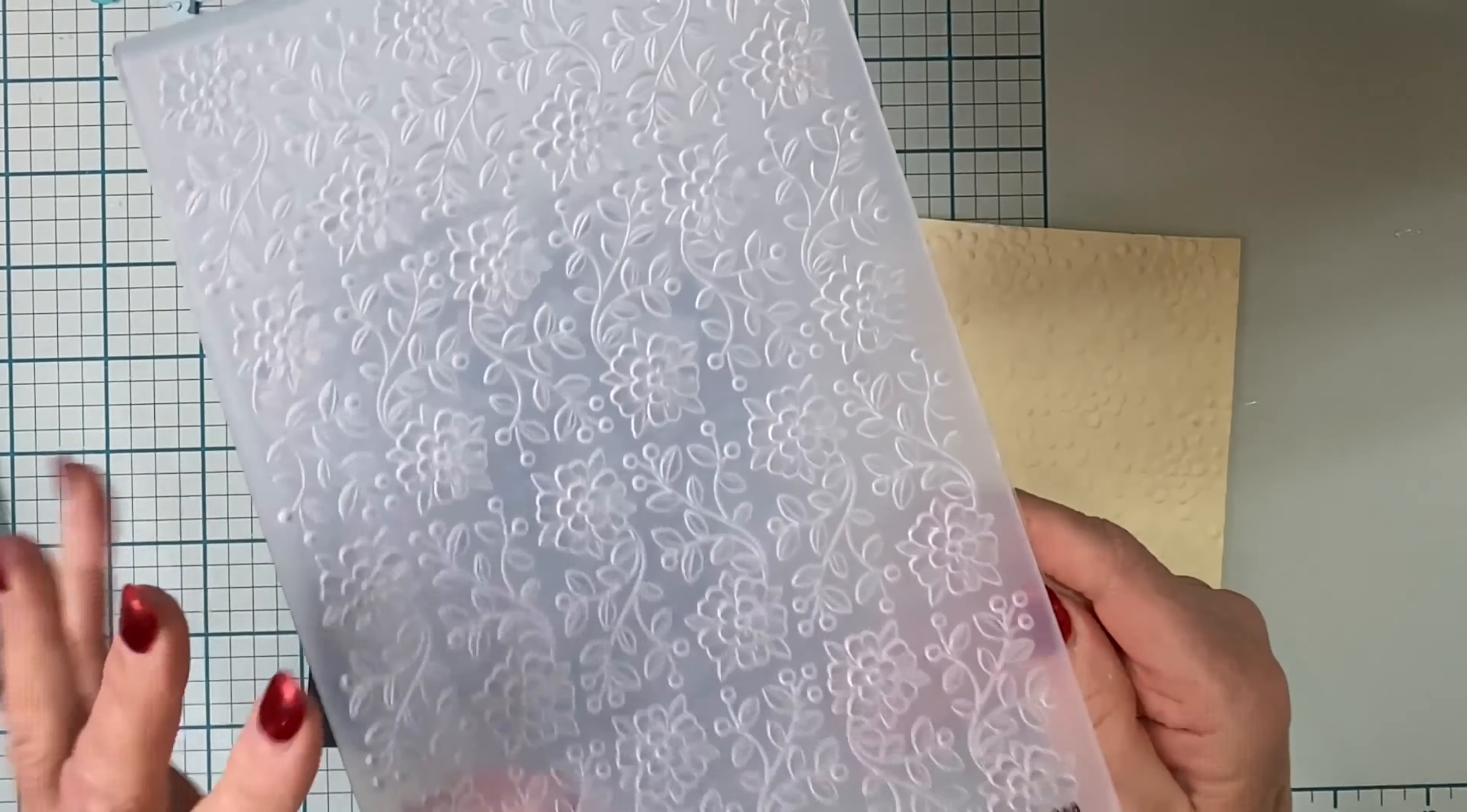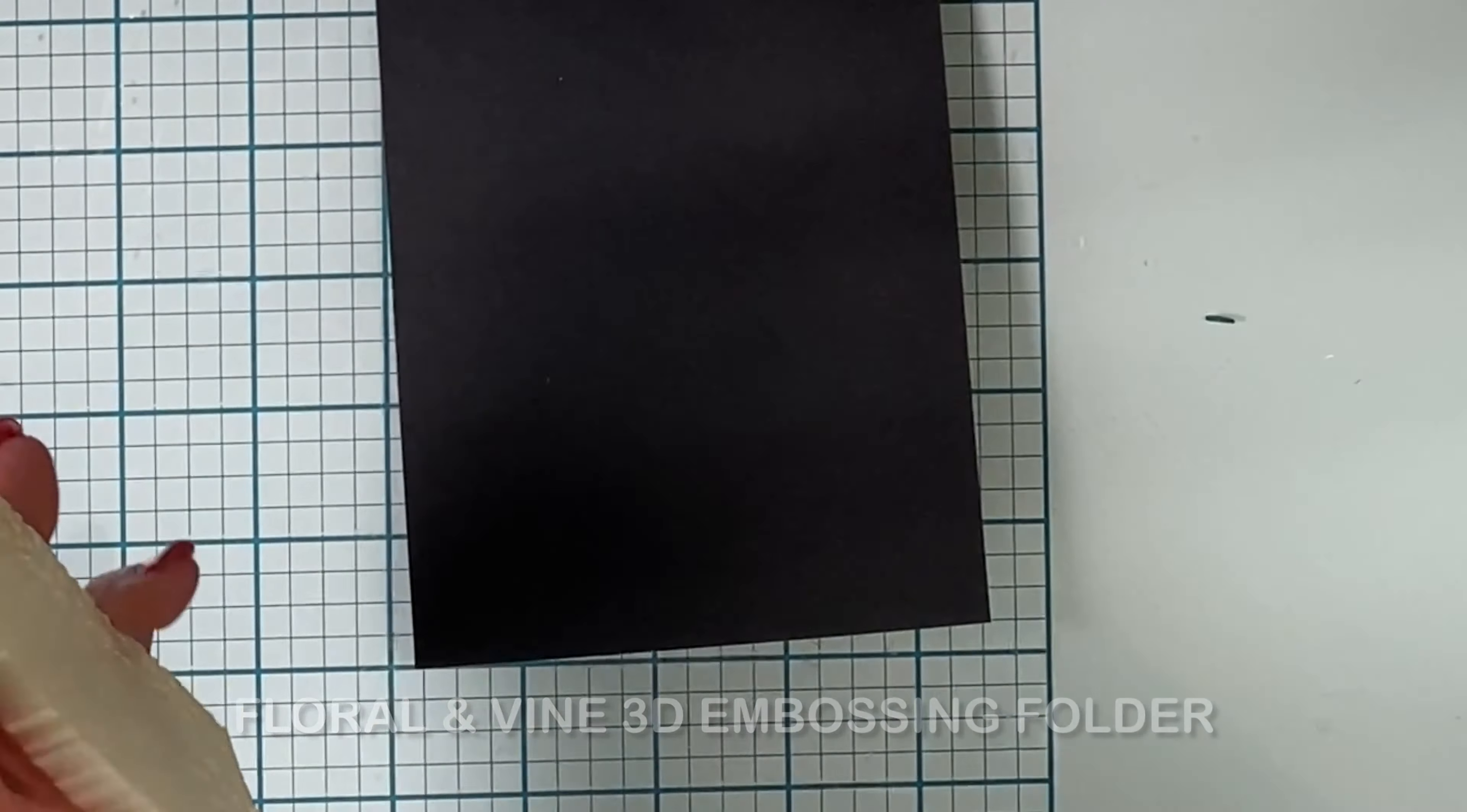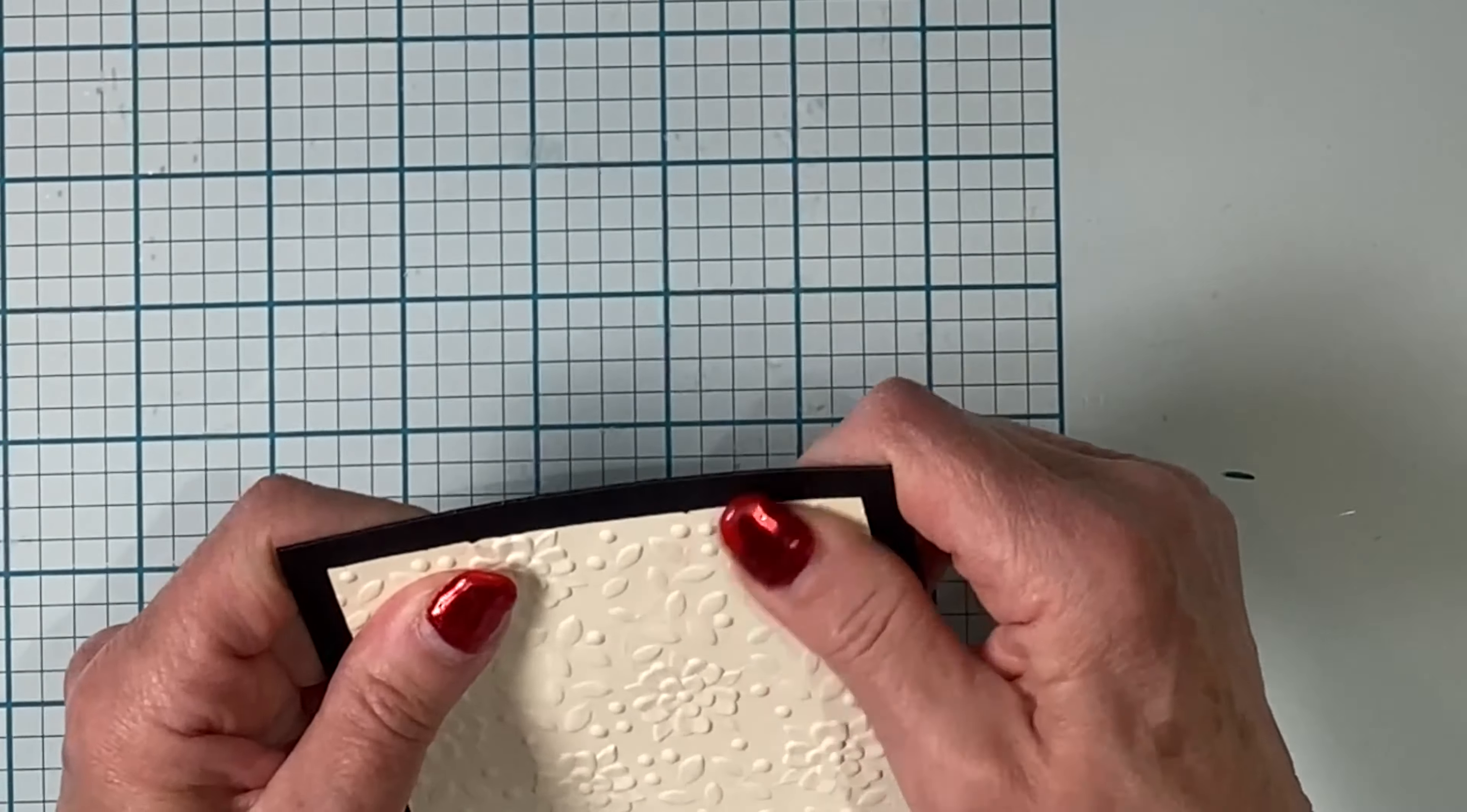Cream cardstock was embossed with floral and vine 3D embossing folder. I trimmed it down to four inches by five and a quarter inches and adhered it to a top folding black A2 size card base.